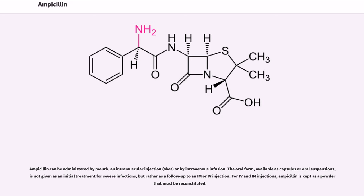Ampicillin can be administered by mouth, an intramuscular injection, or by intravenous infusion. The oral form, available as capsules or oral suspensions, is not given as an initial treatment for severe infections, but rather as a follow-up to an IM or IV injection.